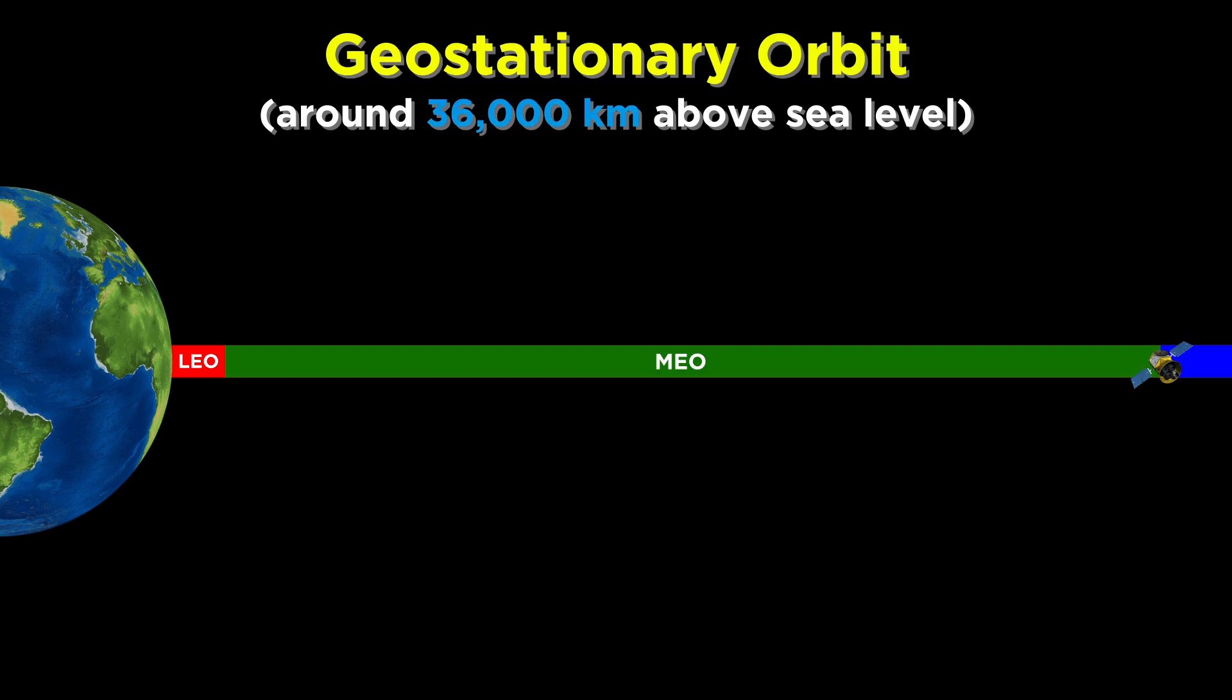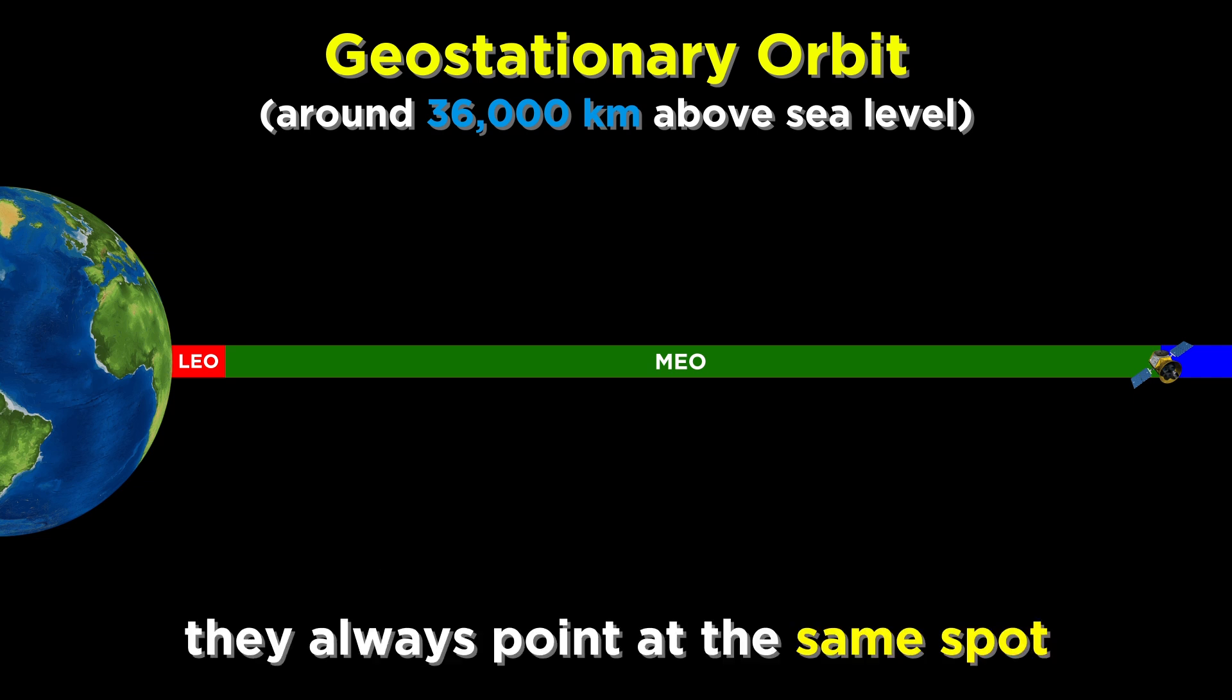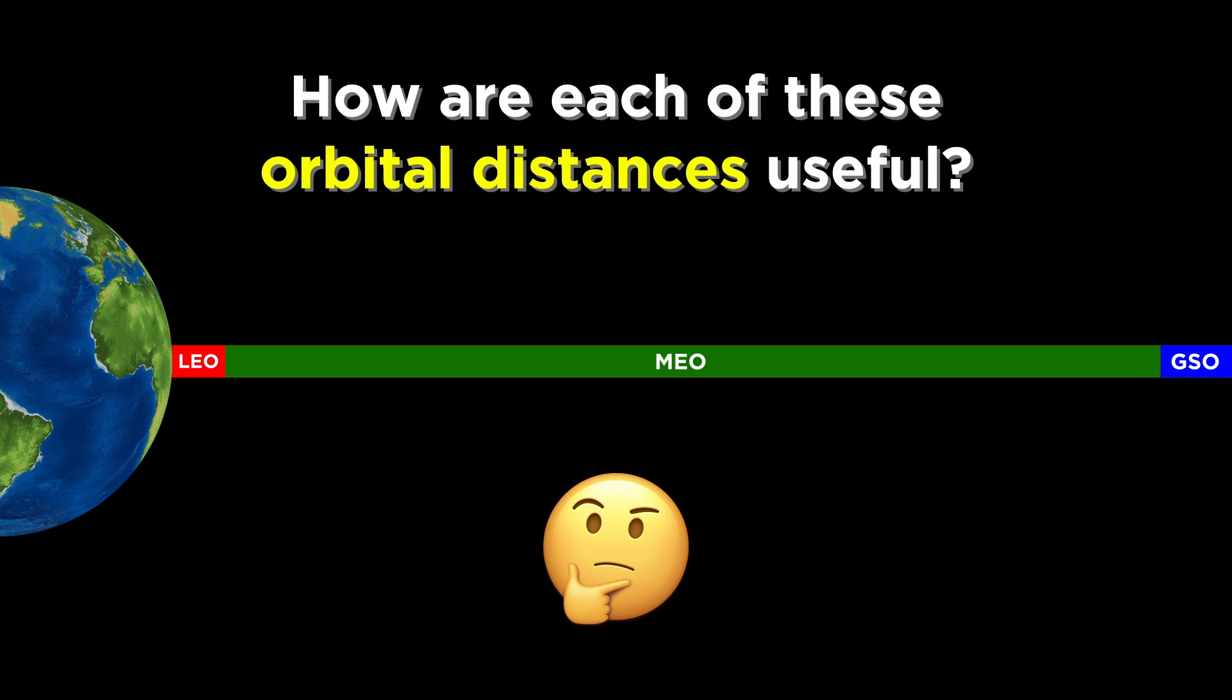And lastly, many of the satellites are very far away, in what we call geostationary orbit. These objects are about 36,000 kilometers above sea level, traveling around three kilometers per second, and they go around the Earth once a day. That's why we call it a geostationary orbit. Objects go around the Earth at the same rate that the Earth rotates, so they always point to the same spot on Earth.